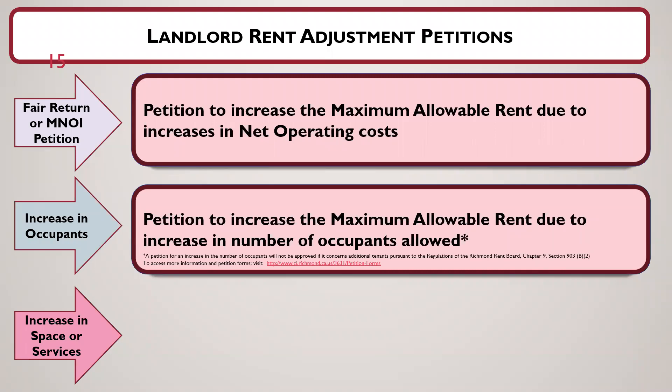The landlord may be able to receive up to 15% in terms of a rent increase for each additional occupant above the base occupancy level. It's important to note that direct family members — meaning mother, father, son, daughter, spouse, registered domestic partner, grandparents and grandchildren — cannot be included in an increase in occupants petition. So if a mother moves in with a family as an additional occupant, the landlord would not qualify for a rent increase because of that move-in.